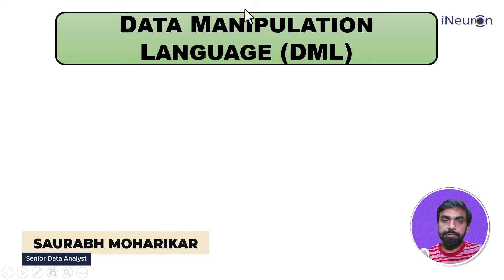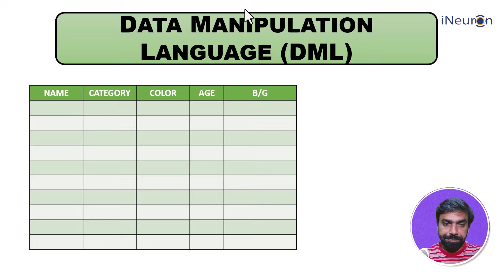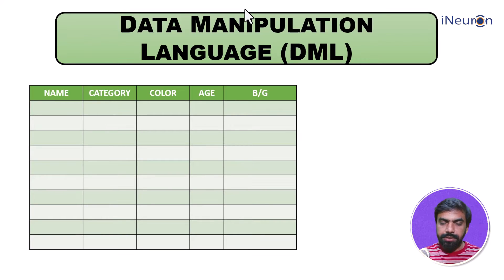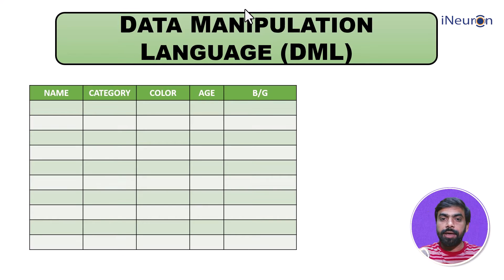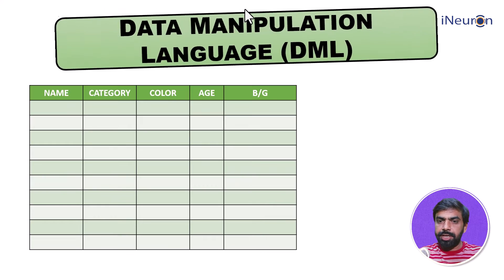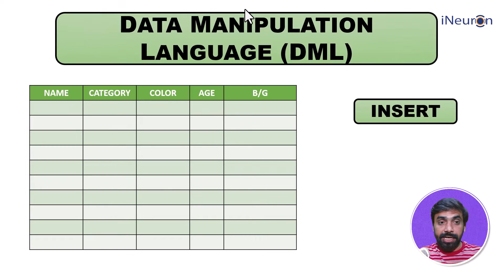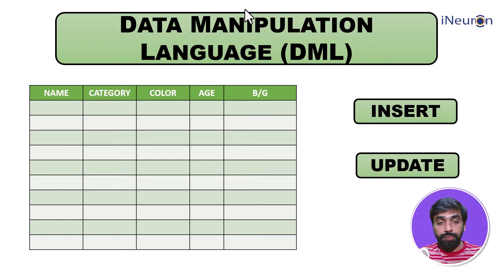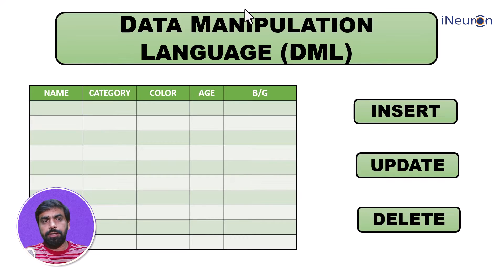Let's move on to Data Manipulation Language. Once we have created our table, in order to make it a database we need to enter data, and that is the job of DML commands. The major DML commands are: INSERT, to insert data into the database or table; UPDATE, to update already present data; and DELETE, to delete already present data. Let's look at them one by one.